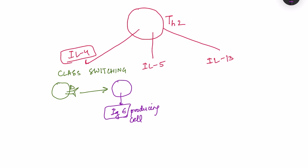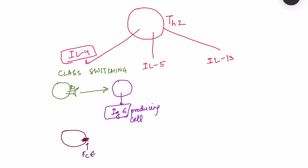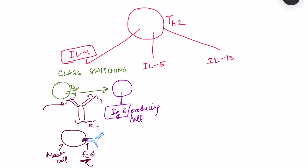IgE antibody is the main antibody responsible for Type 1 hypersensitivity. These IgE antibodies attach to a specific receptor on mast cells called the FcɛRI receptor — the receptor for the constant portion of the antibody. The constant portion of IgE binds to this FcɛRI receptor, while the variable binding portion remains specific for a particular antigen.